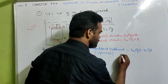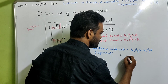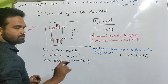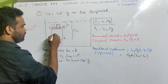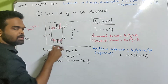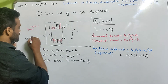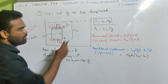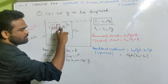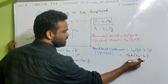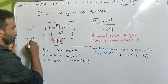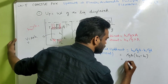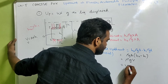Taking rho·G·A common, we get rho·G·A into (H2 minus H1). Now the volume of the cylinder is area into h, where h = H2 minus H1. So area into (H2 minus H1) is nothing but the volume of the cylinder.